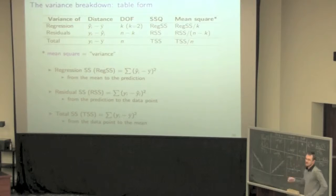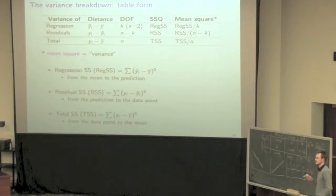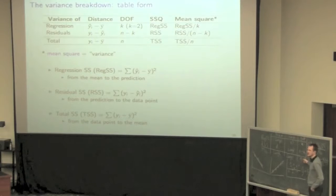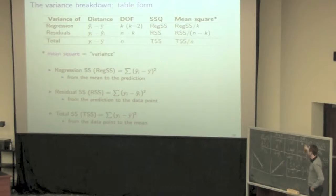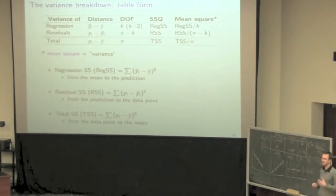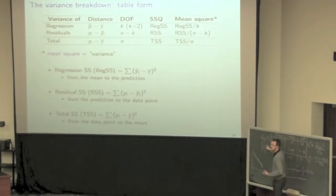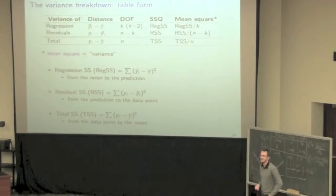The more data points you have, the more degrees of freedom. Next week we'll look at multiple parameters, but for now with a single slope and single intercept, there are three degrees of freedom rows we refer to: the first row for regression, the second for residuals, and the total. The total degrees of freedom is always n. The degrees of freedom that you'll most commonly refer to is n minus k — the residual degrees of freedom.